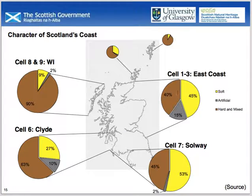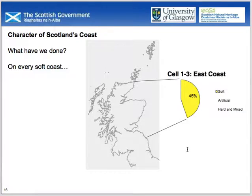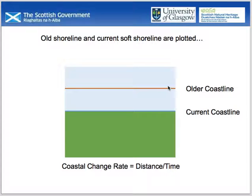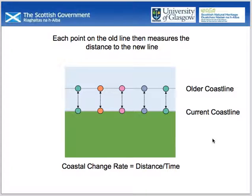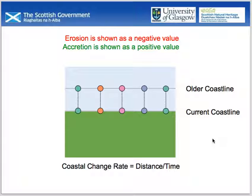So what have we done within the soft and artificial areas? We concentrate on the soft bits. We take the old shoreline and the current shoreline and place dots every 10 metres along the soft coast. We then automatically calculate the distance between those dots and the newer shoreline, note the survey dates for each of the lines, and using a distance divided by time calculation, identify the rate of change. Results are displayed with erosion shown as a negative or red value, and accretion as a positive or green value. This approach runs through both the numeric and mapped results.